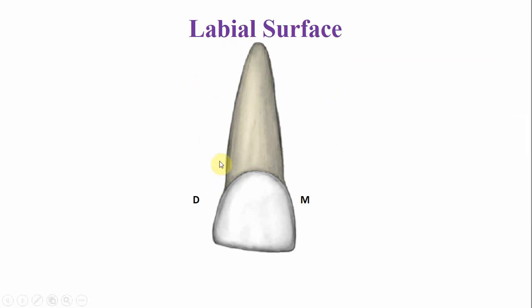From the labial surface, this is the crown. The crown appears wider mesiodistally as compared to the incisocervical dimension. The mesial and distal outlines are more rounded — this is the mesial outline, it is more rounded, and the distal is also more rounded — if you compare it with the maxillary permanent central incisor. This is the incisal surface, and it slopes towards the distal side.